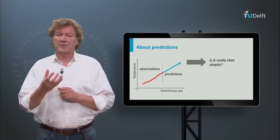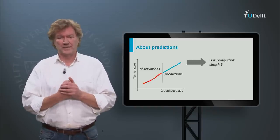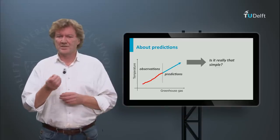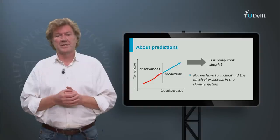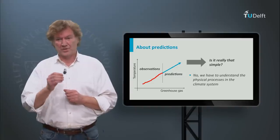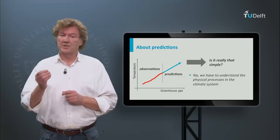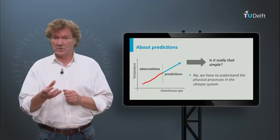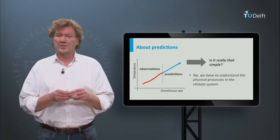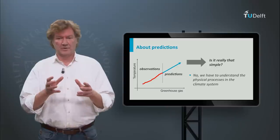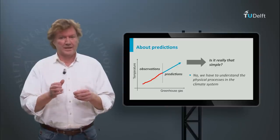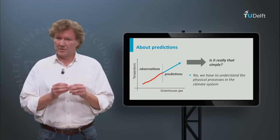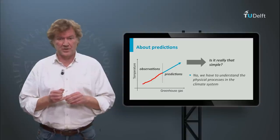Now that we have seen that the recent temperature trend follows the increase of CO2, it might be tempting to simply extrapolate this correlation to make a prediction of future temperatures. It is not that simple. For instance, if we force the temperature to increase by injecting more CO2 into the atmosphere, the system can respond by releasing more water vapour. Water vapour is a strong greenhouse gas itself and will increase the warming even more. This is called a feedback. The climate system is very complex with many such feedback processes, and we must understand these physical processes before we can say something about its future development.